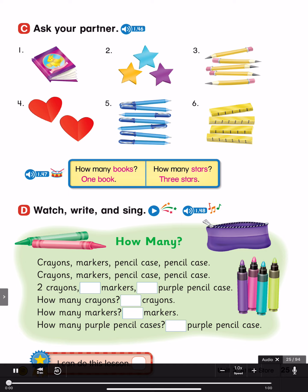Page 25 Drum Track. How many books? One book. How many stars? Three stars. How many pencils? Five pencils. How many hearts? Two hearts. How many pens? Seven pens. How many rulers? Four rulers.